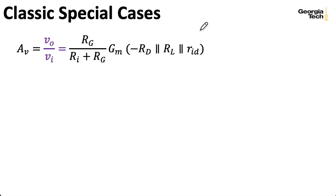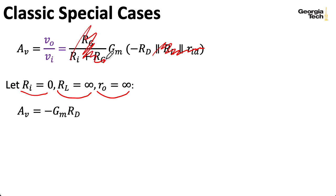Let's consider some special cases. Suppose that the output resistance of our source is zero, that our load resistance is infinite, and R0 is infinite. In that case, all of this stuff here goes away, and this term here in front goes away, and we wind up with minus GM times RD for our gain.